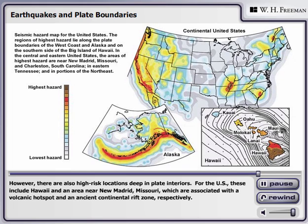However, there are also high-risk locations deep in plate interiors. For the U.S., these include Hawaii and an area near New Madrid, Missouri, which are associated with a volcanic hot spot and an ancient continental rift zone, respectively.